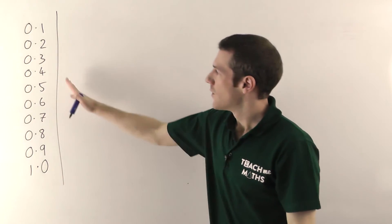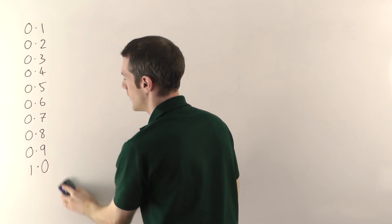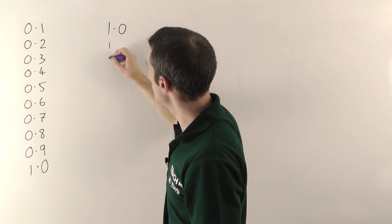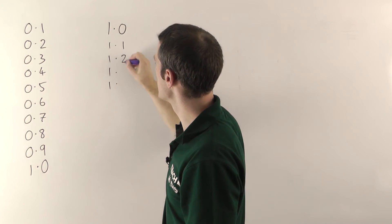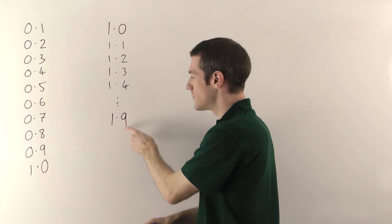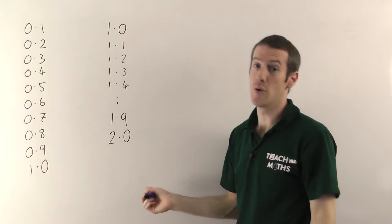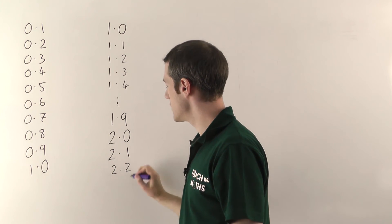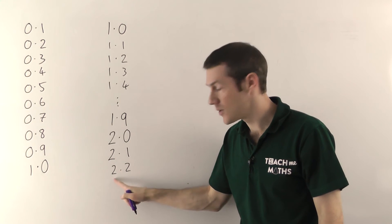Alright, so we've learned that after 0.8, 0.9 comes 1. Let's see what happens next. If we're counting in 0.1s, the units digit stays the same — so we have 1.0, and you cycle through your digits: 1.0, 1.1, 1.2, 1.3, and so on. Keep going until we get to 1.9. Then the 9 rolls over to a 0, and you add 1 onto the next column — that becomes 2, or 2.0. Then carry on: 2.1, 2.2. Whenever the 9 rolls over, that's when you add one; otherwise the units digit stays the same.